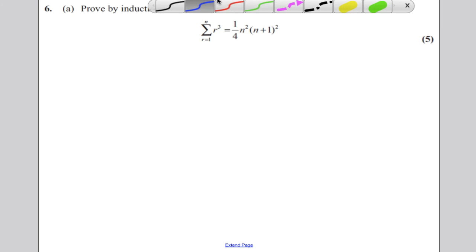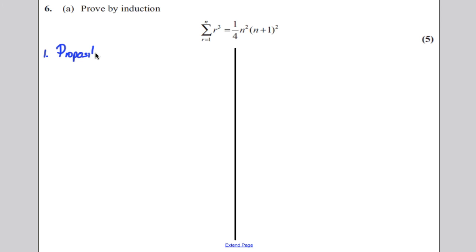A proof by induction is very formulaic. I'm going to split the page in half so we can get everything on the page. The first step is to write down your proposition. Your proposition is just to say that the sum from R equals 1 to N of R cubed is a quarter N squared times N plus 1 all squared. I find that handy to write down just so I can keep track in my head what I'm trying to show.